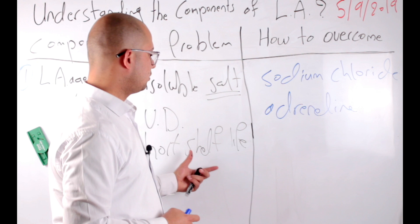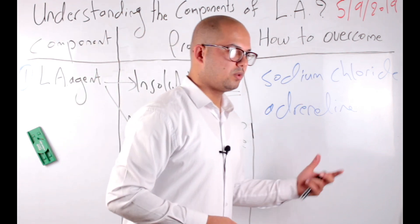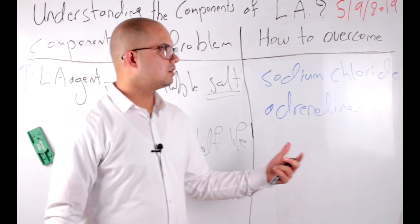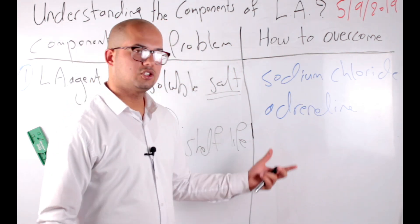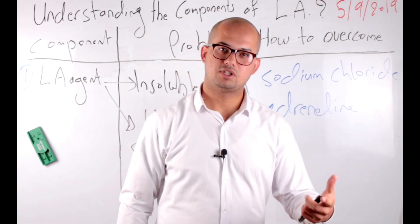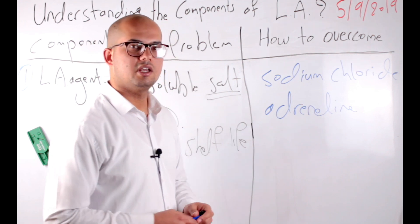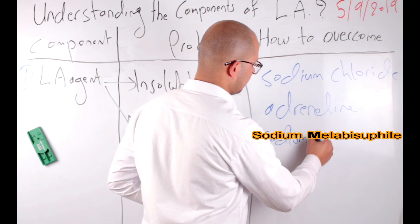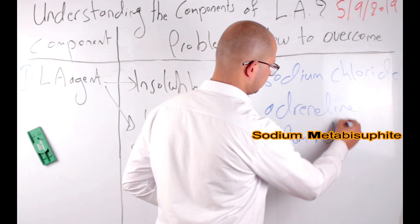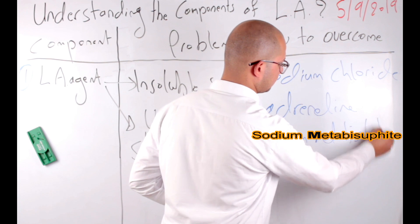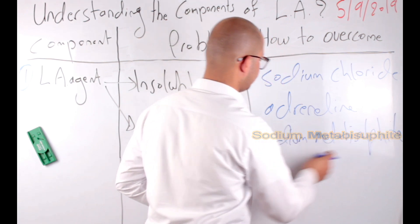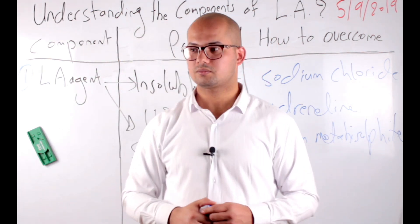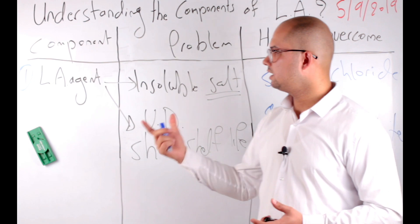How to overcome the short shelf life problem? We need to prevent the oxidation reaction of adrenaline. So we add a reducing agent — the best reducing agent to prevent the oxidation of adrenaline is sodium metabisulfite. This becomes the fourth component.